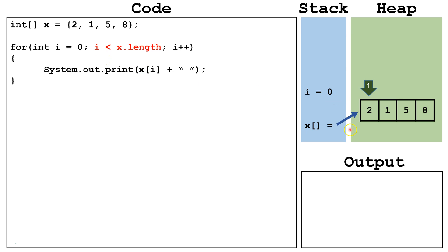So 0 is less than 4, so this is true. We continue along with the loop. Then we print out x index 0, which is the number 2 and a space. We get to the end of the loop, so we increment i to 1.